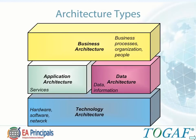TOGAF 9 covers the development of four architecture domains. These are commonly accepted as subsets of an overall enterprise architecture, all of which TOGAF is designed to support. The Business or Process Architecture defines the business strategy, governance, organization, and key business processes.